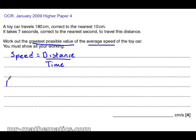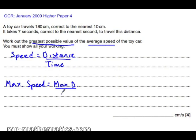We are looking for the maximum speed. This is the greatest distance — the upper bound of the distance, the maximum — divided by the shortest time, the minimum time.